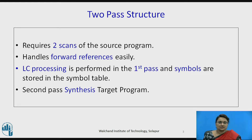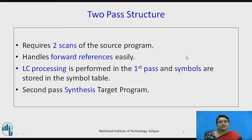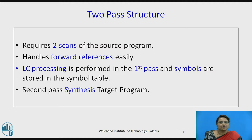What is this two-pass structure? It requires two scans of the source program. A scan means one complete read of a particular program. The advantage is it handles forward references easily. The location counter processing is performed in the first pass, and all the symbols we are using are assembled in pass one, and the symbol table is generated in pass one.